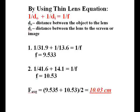Calculation. Our group used the thin lens equation shown on the picture, which is 1 over d-object plus 1 over d-image is equal to 1 over f.